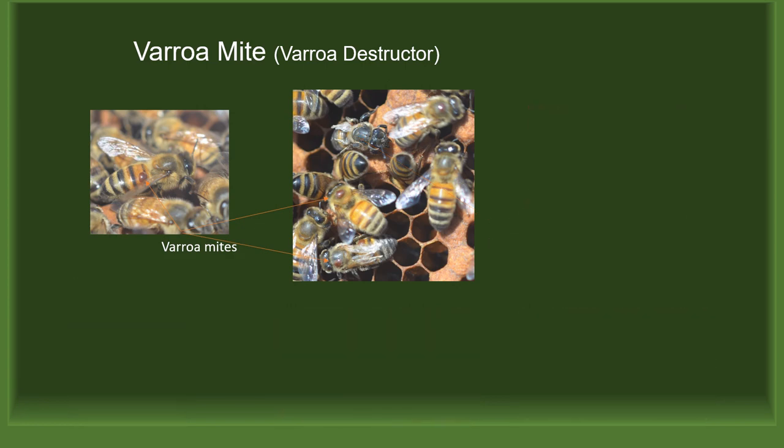Of all the threats to the honeybees, there are none more destructive and dangerous than the varroa mite. While the varroa mite can be seen by the naked eye, they can be observed walking on frames, on bottom boards, and on the thorax and abdomen of honeybees, as seen in the pictures.